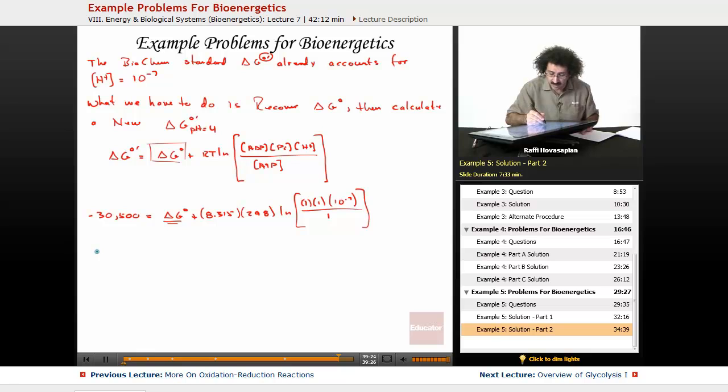When we do this and solve for delta G, what we get is the following. Delta G chemical standard equals 9,438 joules per mole.